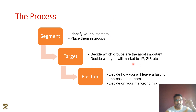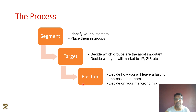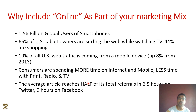Prioritize your groups — priority number one, priority number two, and so on. This is what we call segmented targeting. Then comes positioning: decide how you will leave an impression, how you will engage with them, how you will connect, and how your marketing mix will be translated into a sales proposition.